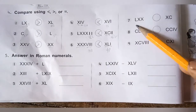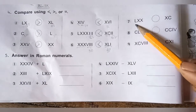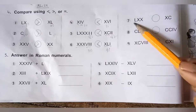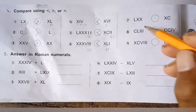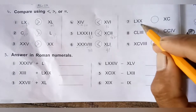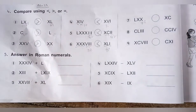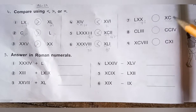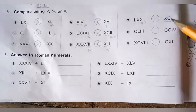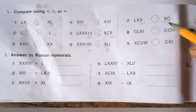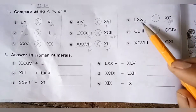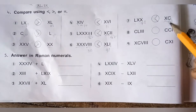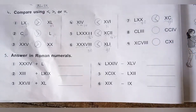Next, LXX: L is 50 and XX is 20, so 50 plus 20 equals 70. The other numeral represents XC: C is 100 and X to the left means 100 minus 10 equals 90. So 70 is less than 90. Fill in the less than symbol here.